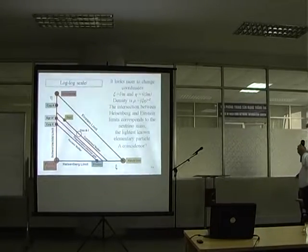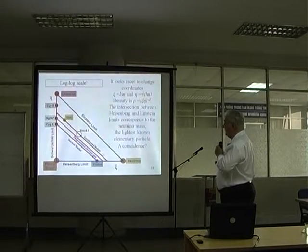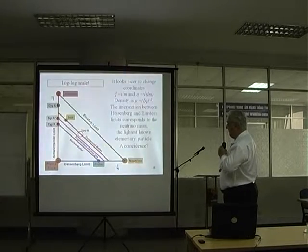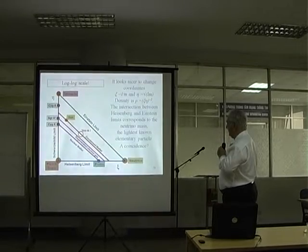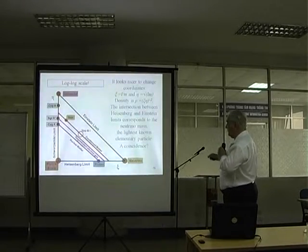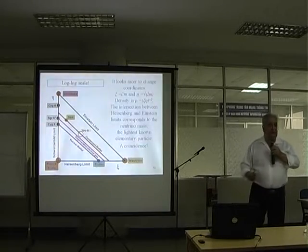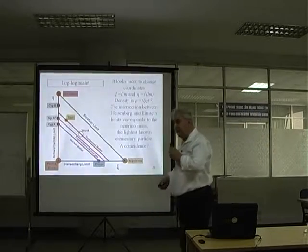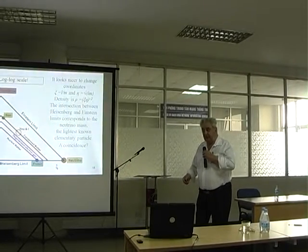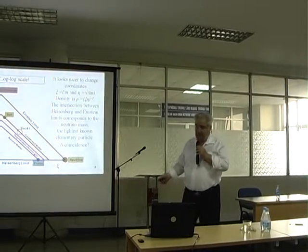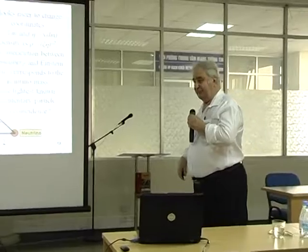We can express this more elegantly by putting the Schwarzschild limit here, the Heisenberg limit here, and the Einstein limit here, just making a trivial change of coordinates. One question is what happens at the crossing between the Einstein limit and the Heisenberg limit. It so happens that the mass there equals the mass of the neutrino — the lightest known elementary particle. Is it by chance, or does it correspond to something deep? Nobody knows. Maybe it's an accident, maybe it's not.